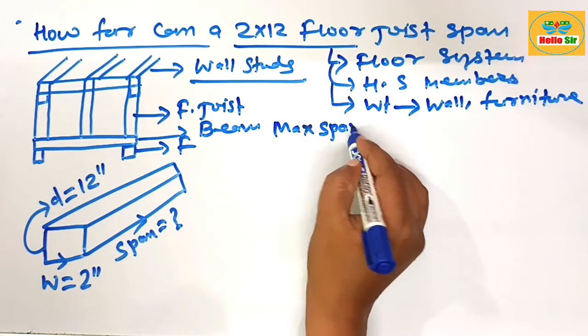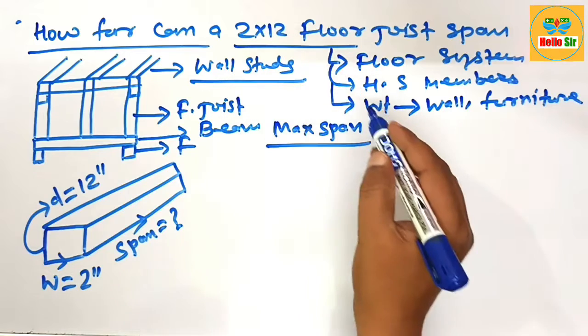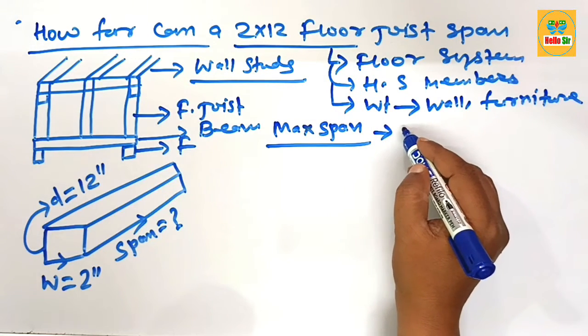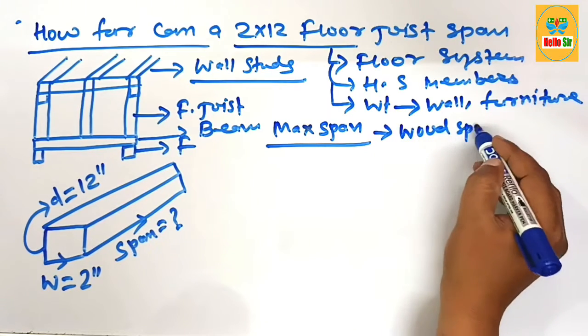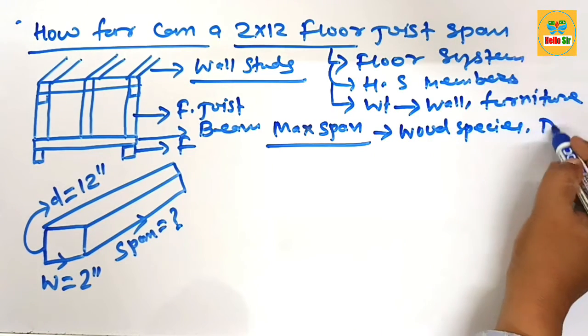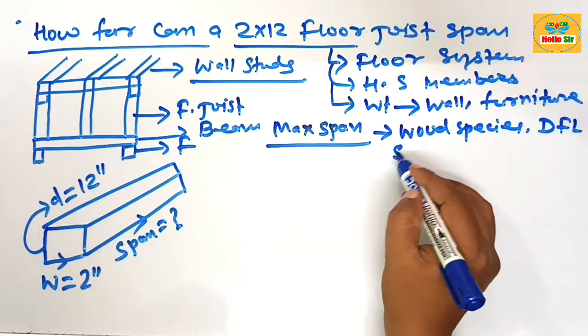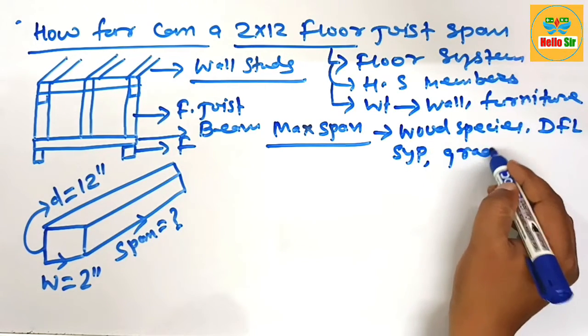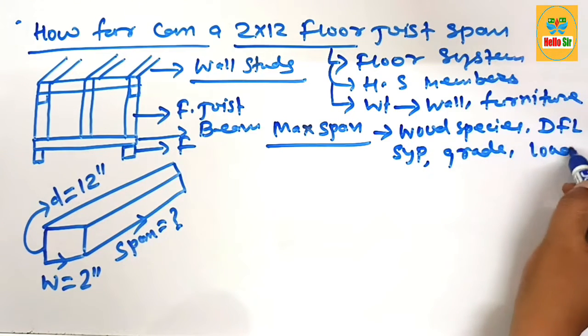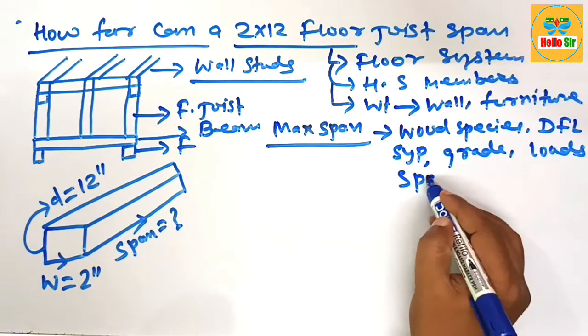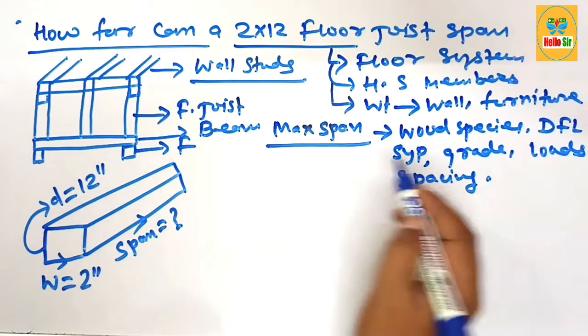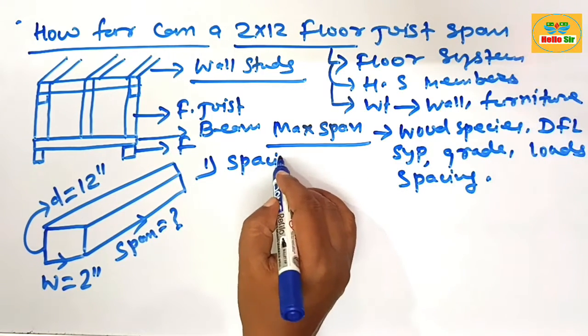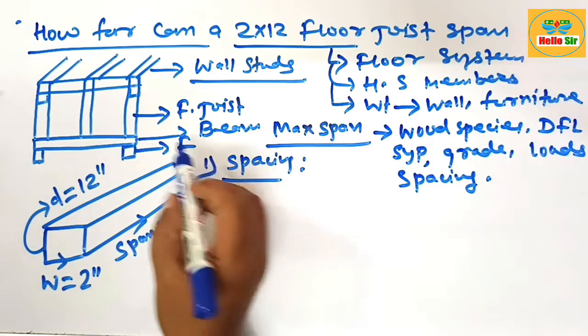What will be the maximum span for a 2 by 12 floor joist? The maximum span for a floor joist depends on wood species like DFL, SYP, hemlock, etc., grade of wood, the load condition including dead load and live load, and spacing between the floor joists.